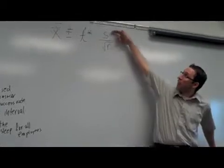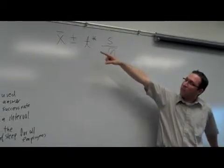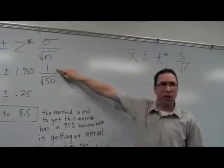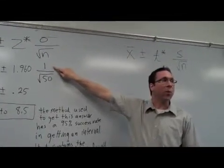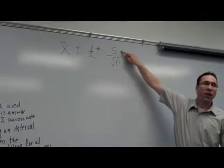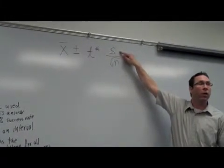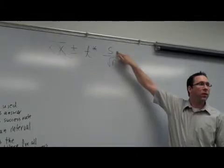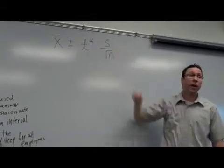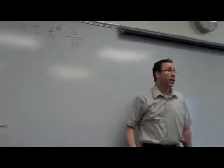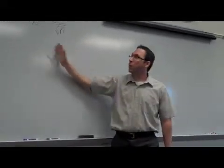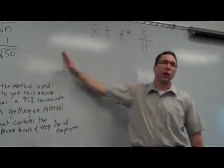So the only number that's really essentially changing is the number that's on top here. For this phony situation, we use the standard deviation coming from the population. For today's work, we're going to use the standard deviation coming from the sample. The sample is the only other standard deviation we could possibly get, and that's something we're going to be using a lot more.